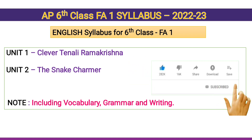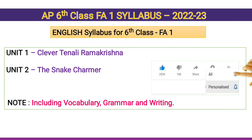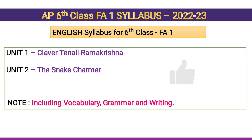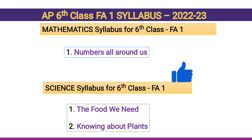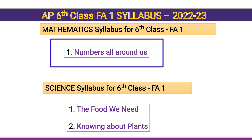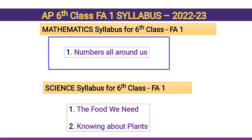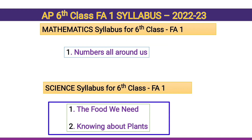English syllabus for sixth class FA1 is: Unit 1 - Clever Tenali Ramakrishna, Unit 2 - The Snake Charmer. Note: including vocabulary, grammar, and writing. Mathematics syllabus for sixth class FA1 is: Numbers All Around Us.